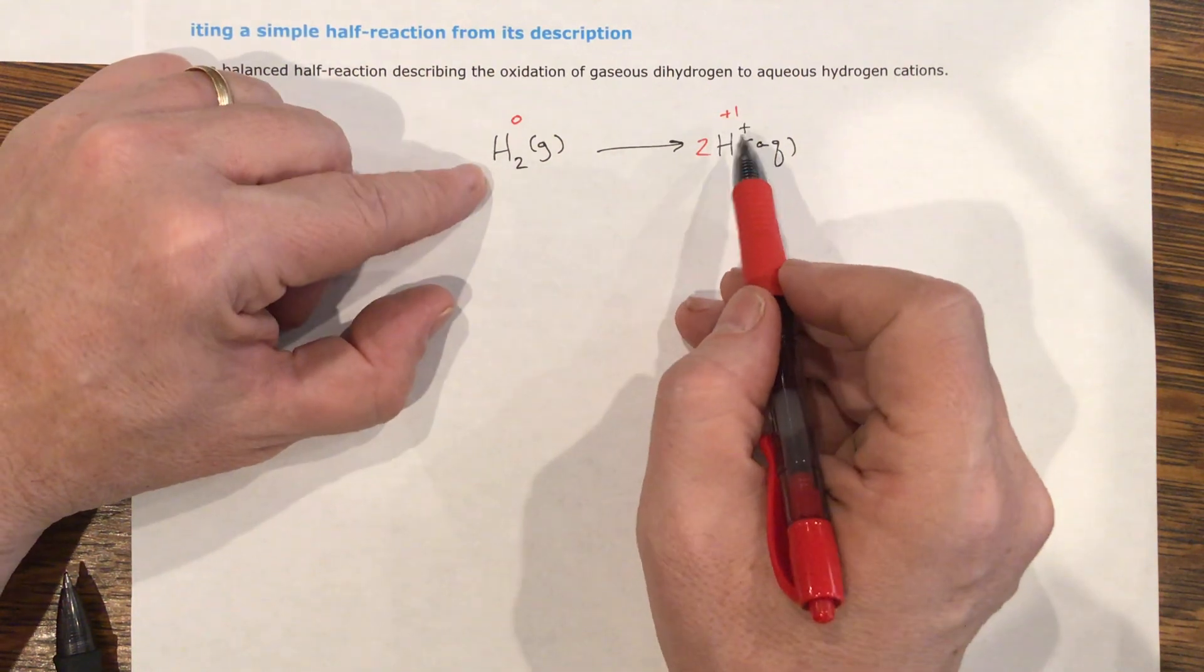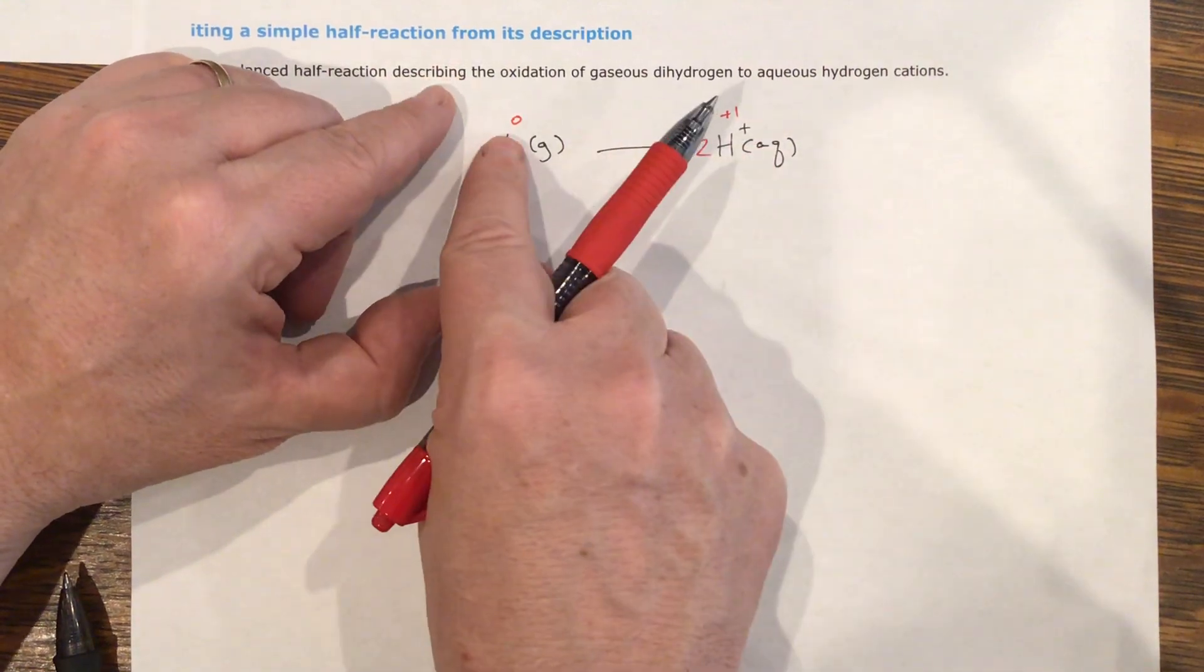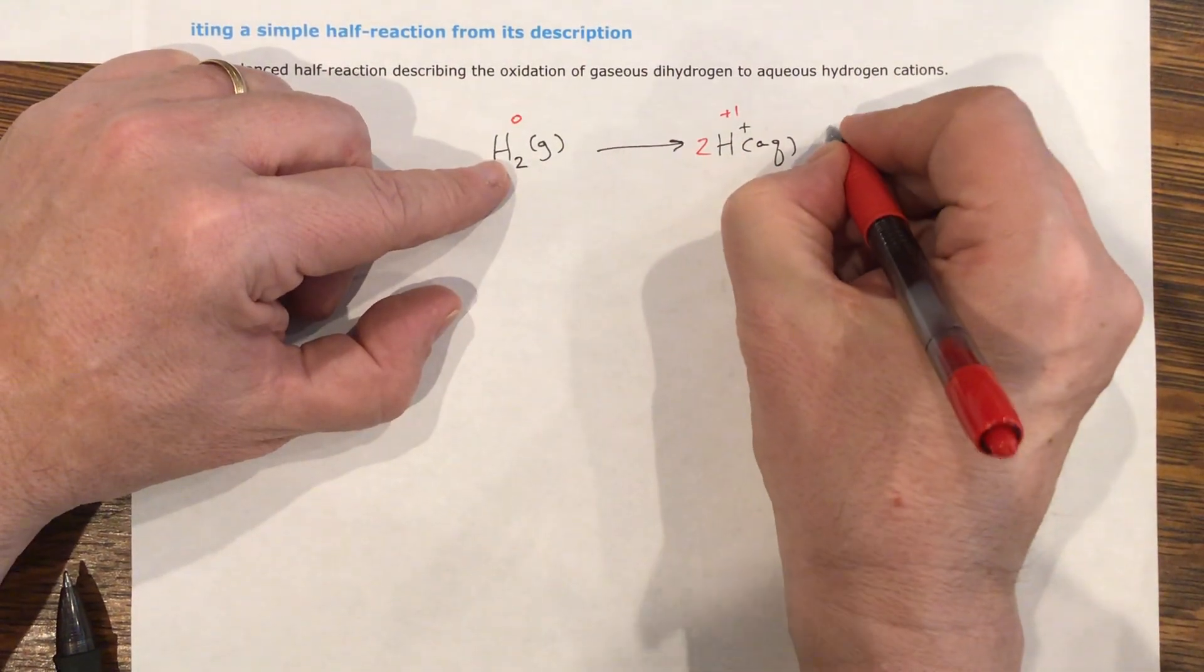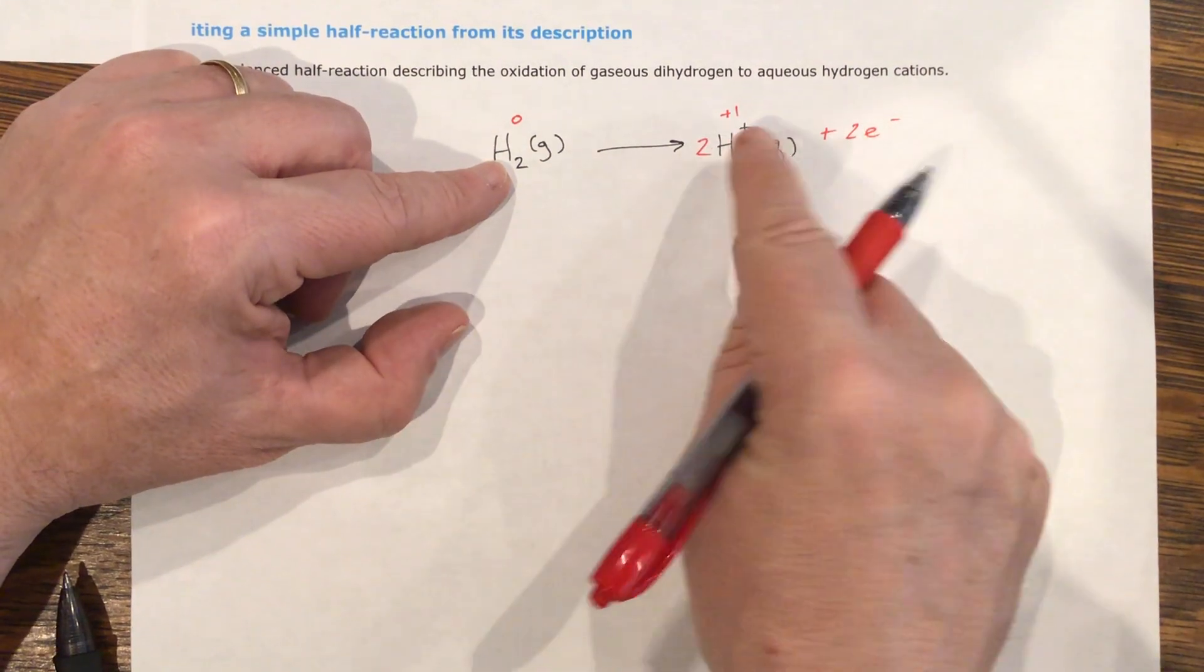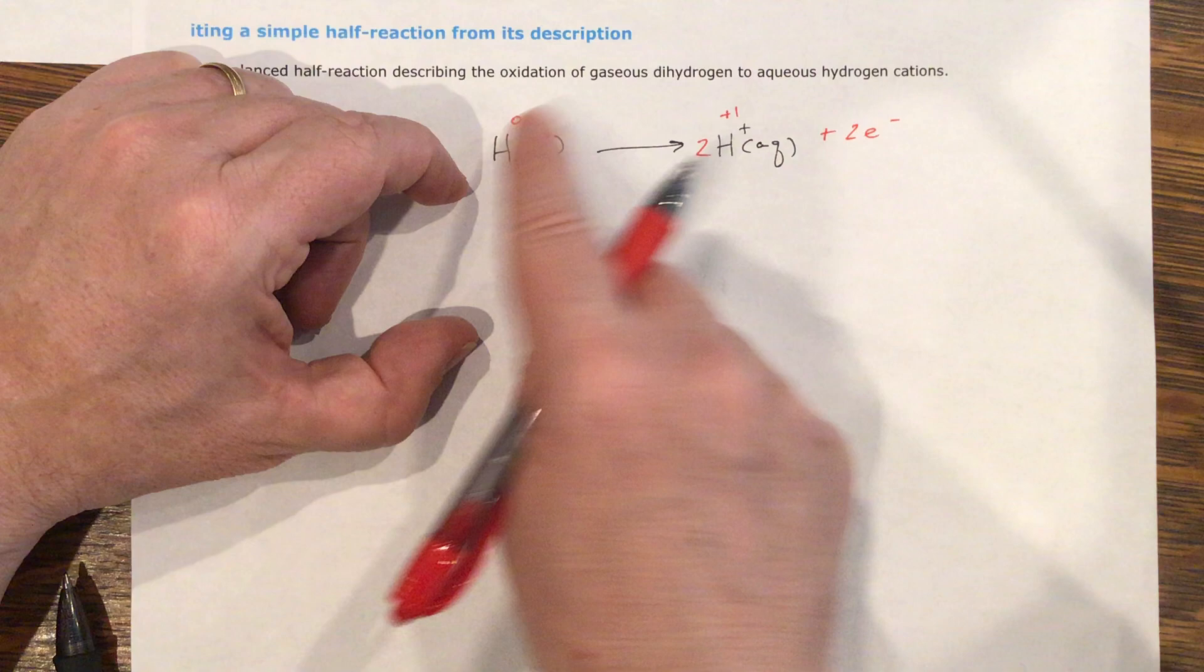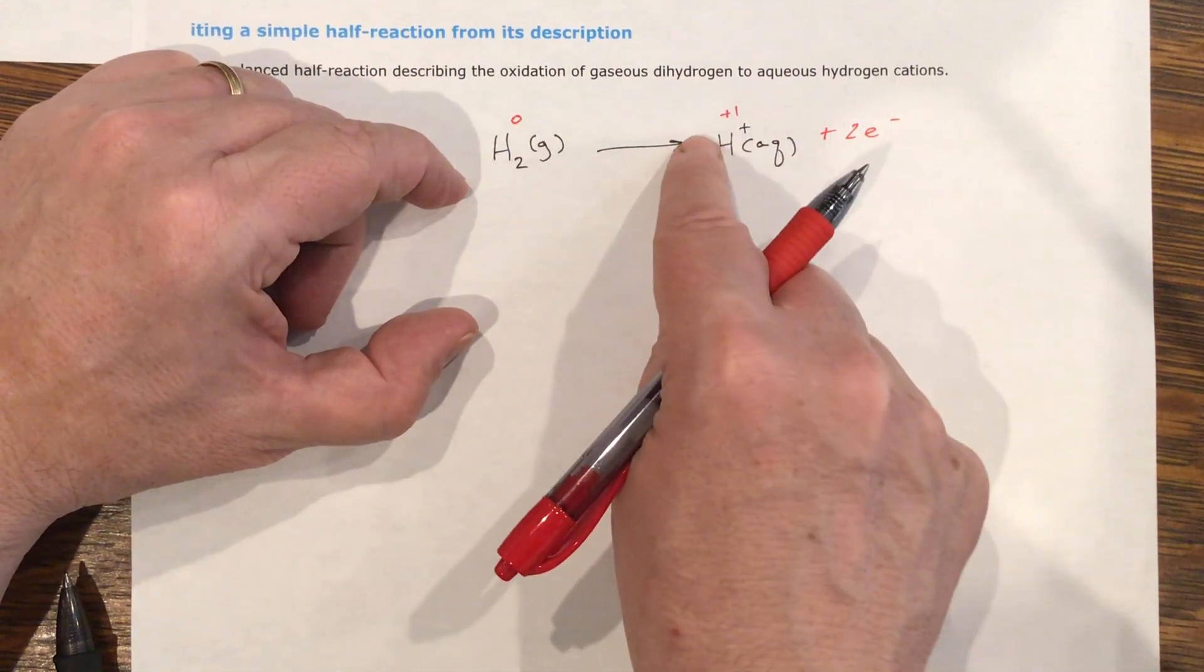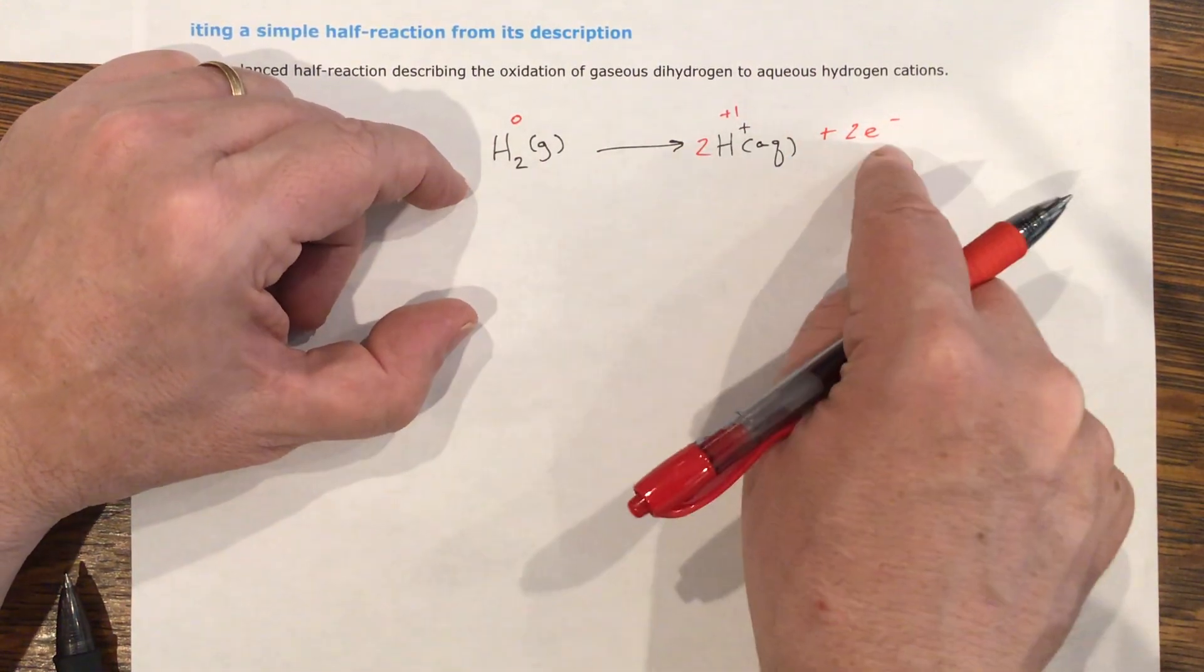So I need them both to be balanced. This is positive two on this side, zero on this side. So I need to add electrons equal to the difference of charge. Here it's positive two, I need it to be zero. So positive two and negative two balances.